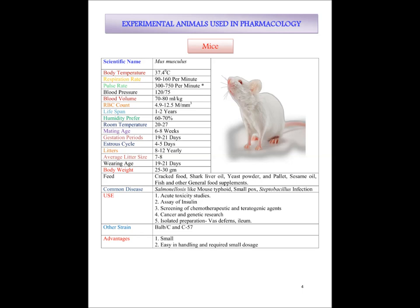Mating age 6 to 8 weeks. Gestation period 19 to 21 days. Estrus cycle shared with rat and mice is 4 to 5 days. Litter size is about 8 to 12 per year, with an average litter size of 7 to 8. Weaning age is nearby 19 to 21 days. Body weight of mice is 25 to 30 grams. The feed they favorably eat includes cracked food, shark liver oil, yeast powder, and seasoned oil, as well as grain and other substances.